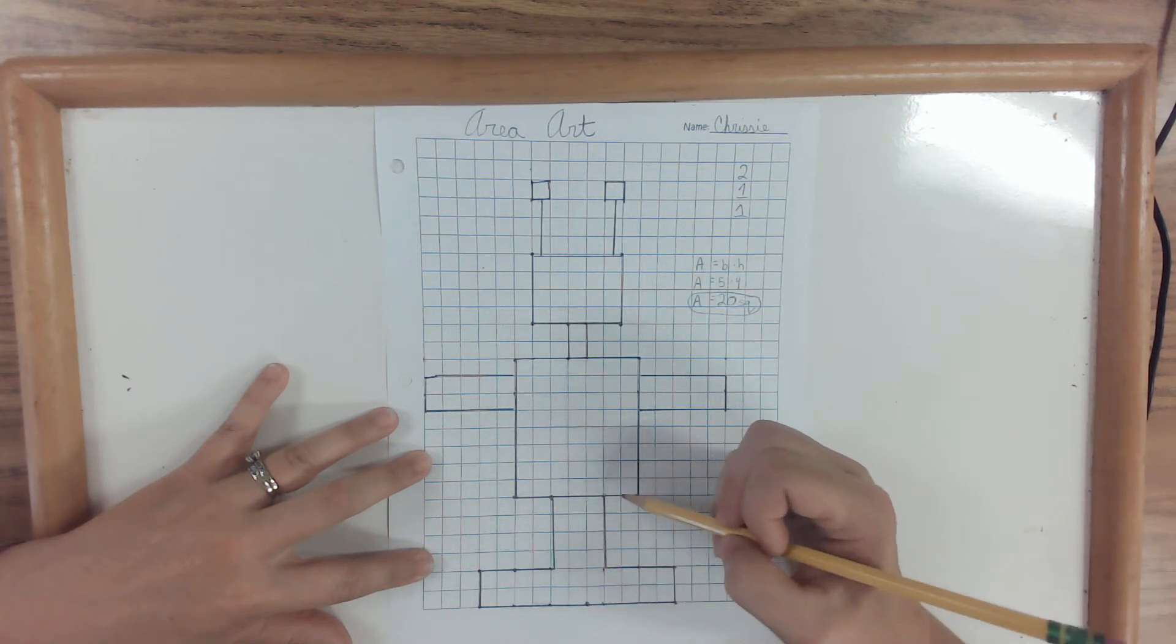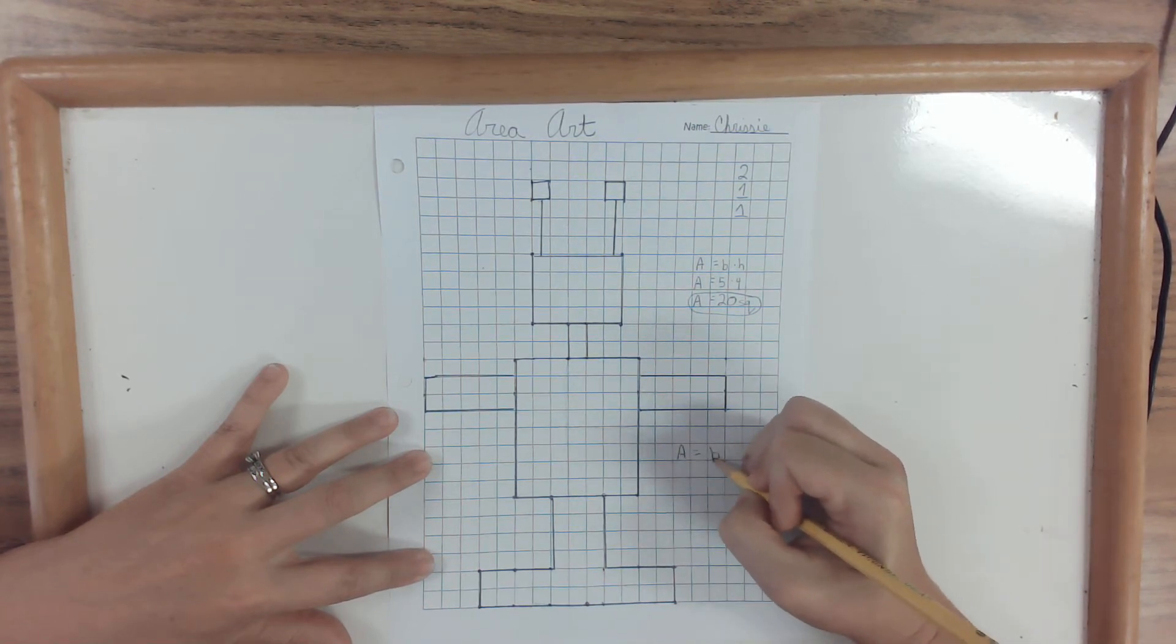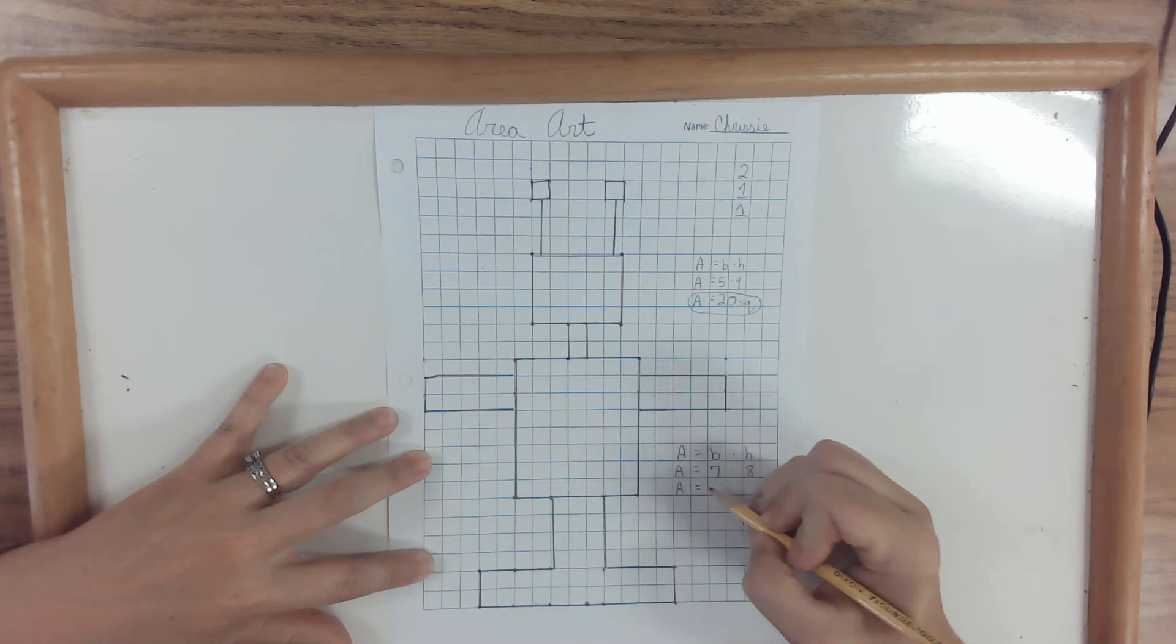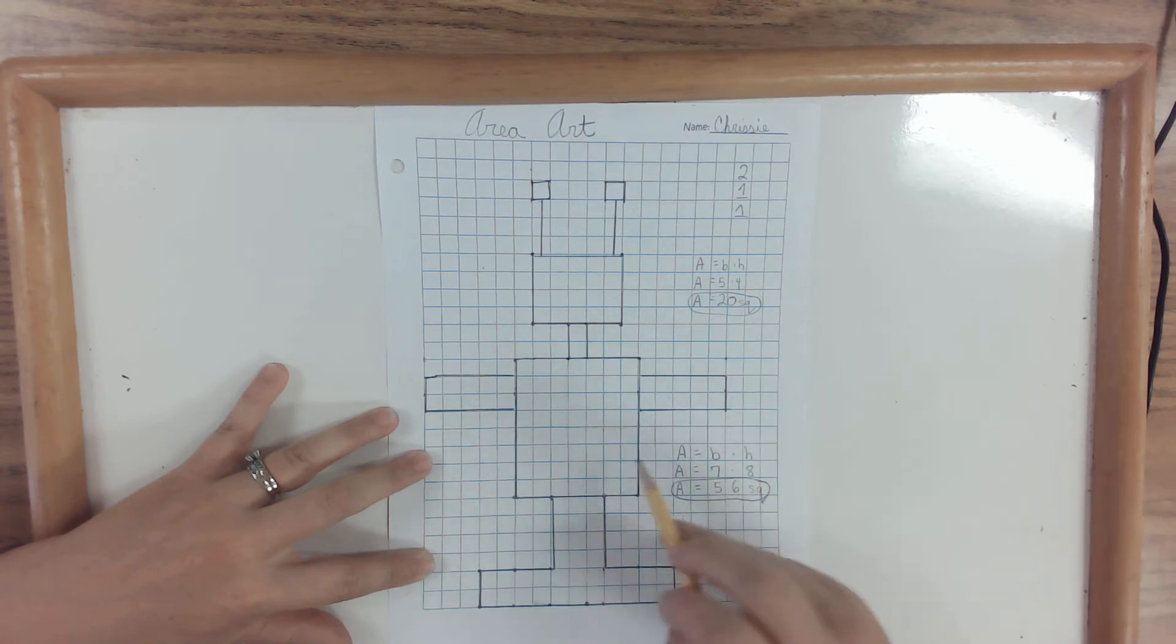So, for right now, I believe that we said it was seven by eight. So A equals base times height. A equals seven times eight. A equals fifty-six squares. And circle. That's this one.